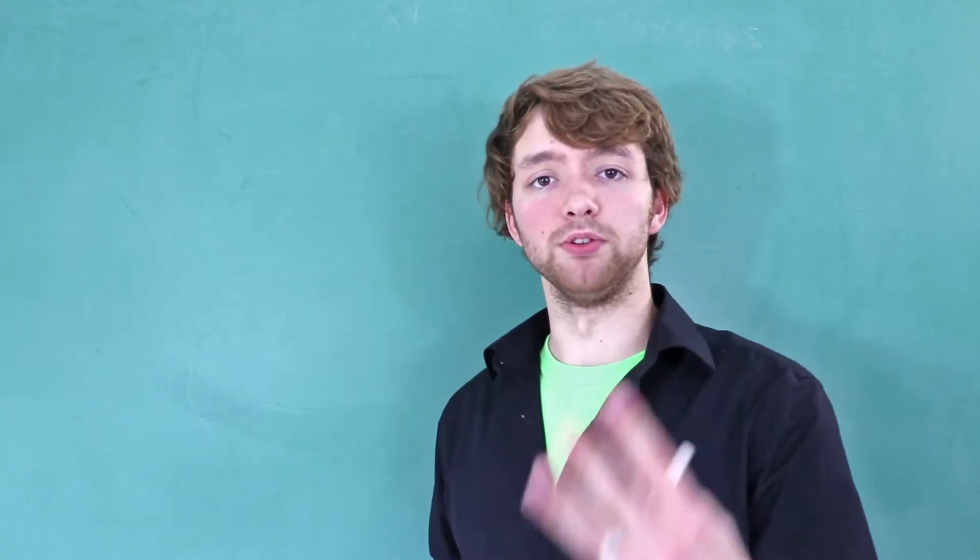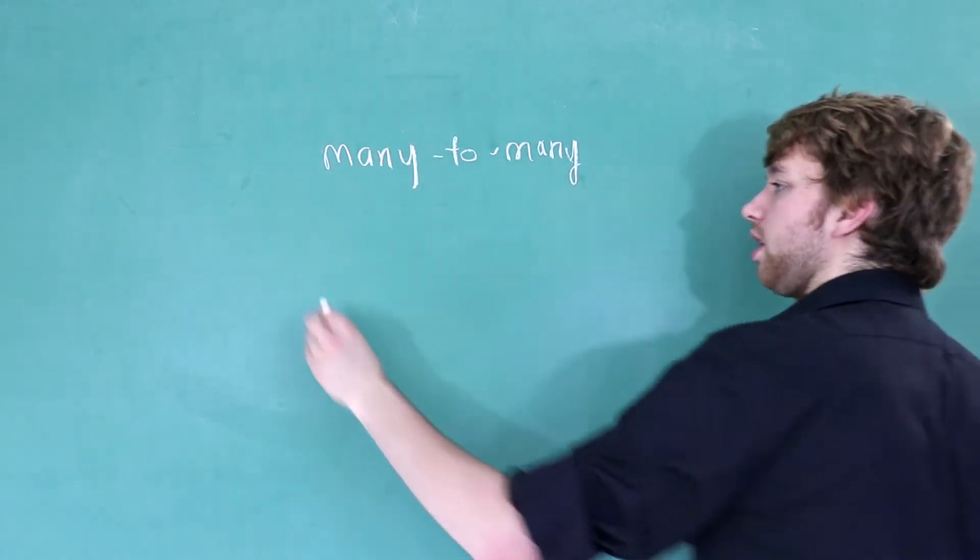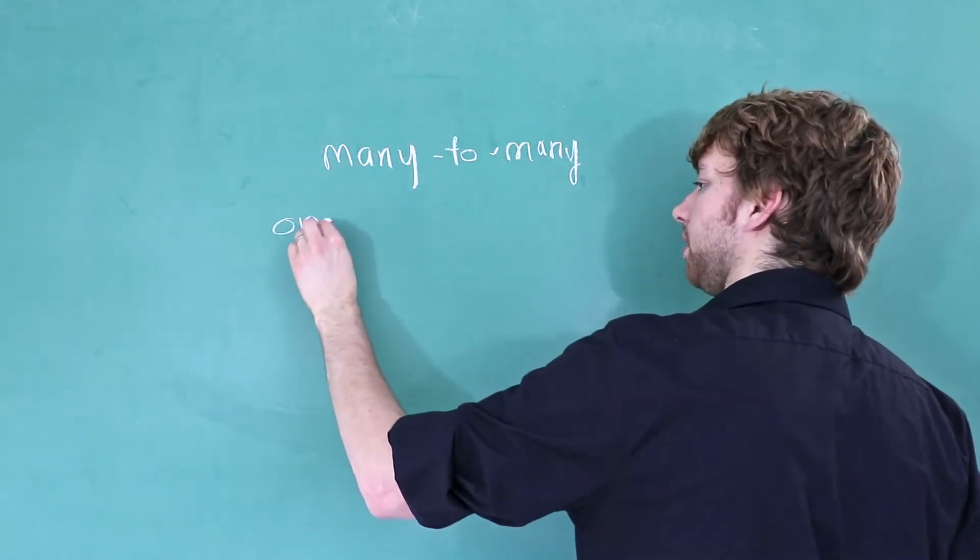In the end, you're going to have three tables. If you think back to one-to-one, we had one table. In a one-to-many, we had two tables. In a many-to-many, we have three tables. The reason is because when you have a many-to-many, what we are going to do is break that up into two one-to-many's.